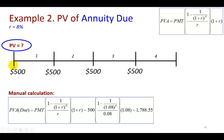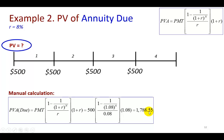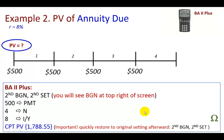Rather than discount each individually and add them up, we can use the present value for annuity due formula. All we have to do is multiply the ordinary annuity result by one plus the required rate of return. This gives us the present value of the annuity due as $1,788.55.